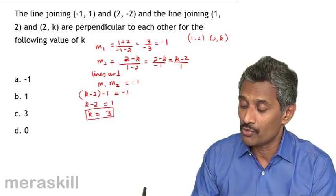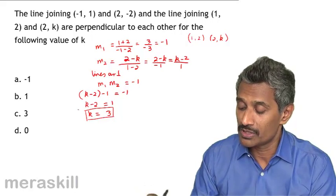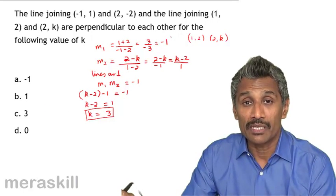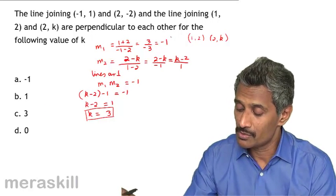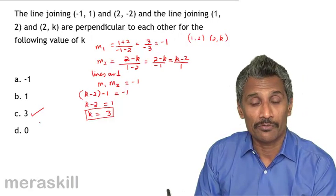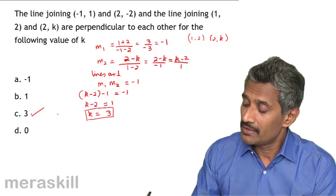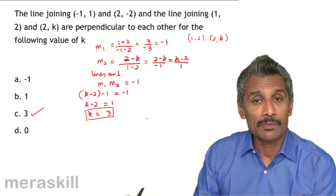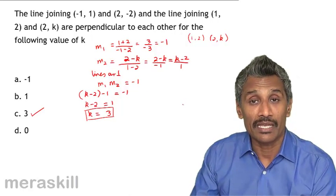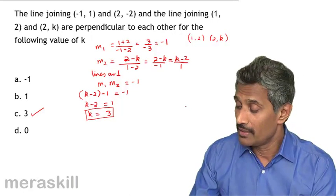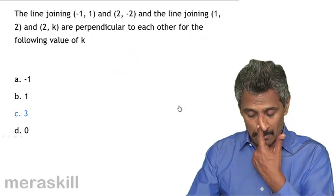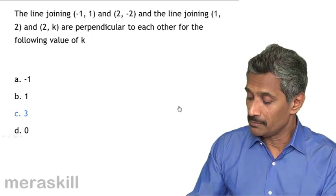For this particular value of k equals 3, the product of the slopes equals minus 1, confirming that the lines are perpendicular to each other. So the answer is k equals 3.